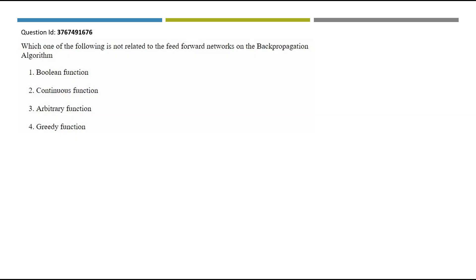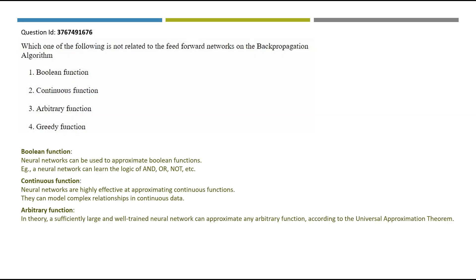The next question asks which of the following is not related to feed-forward networks and the backpropagation algorithm. Boolean functions: neural networks can approximate boolean functions and learn the logic of AND, OR, and NOT — so this applies to feed-forward networks. Continuous functions: neural networks are highly effective at approximating continuous functions and can model complex relationships in continuous data — this also applies.